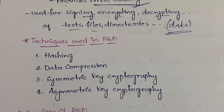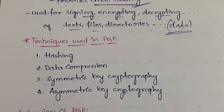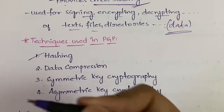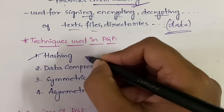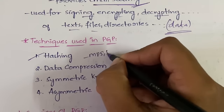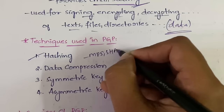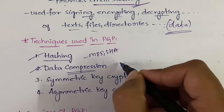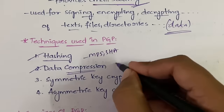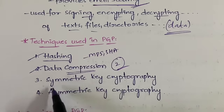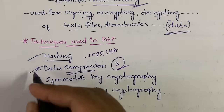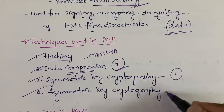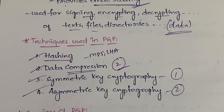In PGP we use several techniques. Number one is hashing — for example, MD5 and SHA algorithms. Next is data compression, denoted as Z. Then symmetric key cryptography, which uses one key, and asymmetric key cryptography, which uses two keys.